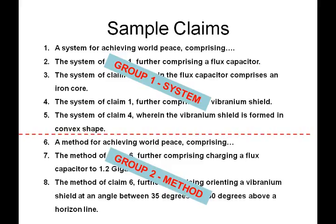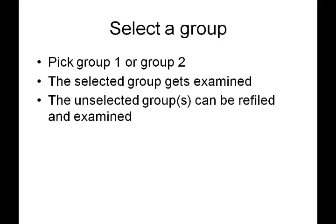The next order of business is to select a group. The inventor or applicant needs to elect a group — either group 1 or group 2 in our example. Suppose we pick group 1. Then group 1, in our case the system claims, will get examined. The method claims, which are unselected, won't get examined at this time.